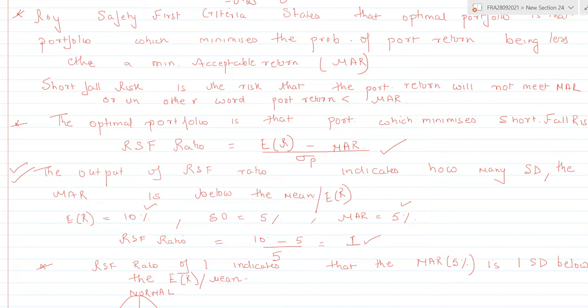In very simple words, Roy's Safety First criteria states that the optimal portfolio is that portfolio which minimizes shortfall risk — that is, the portfolio which minimizes the probability of the portfolio return being less than the minimum acceptable return.